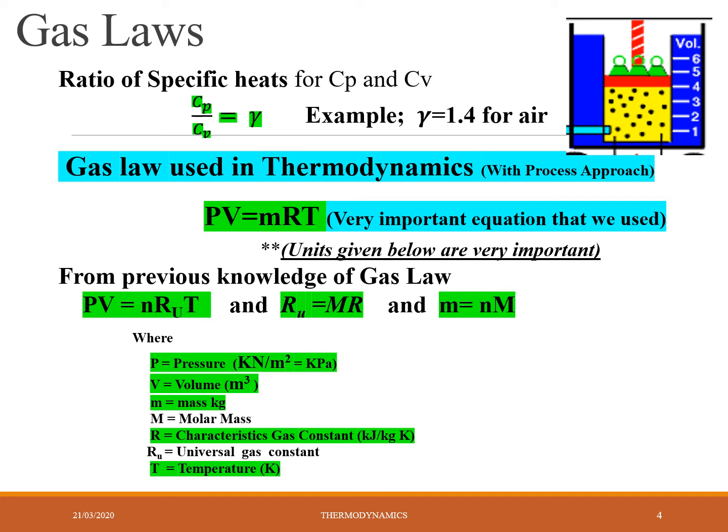Now we come to the ratio of specific heats. Cp is specific heat at constant pressure and Cv is specific heat at constant volume. Gamma (γ) is defined as the ratio of specific heats: γ = Cp / Cv. For air as a working fluid, γ = 1.4. Then we move on a little deeper into gas laws.